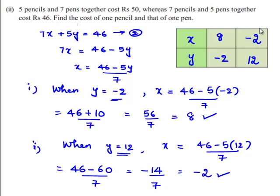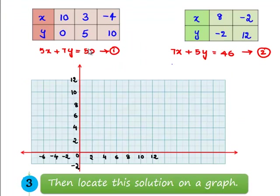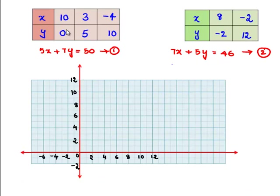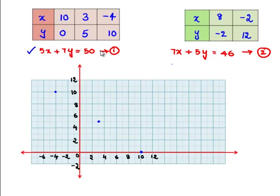Let us plot the graph using these tabulated values. The first equation is 5x plus 7y equals 50. The corresponding points are (10, 0), (3, 5), and (minus 4, 10). Joining these three blue points gives the straight line 5x plus 7y equals 50.